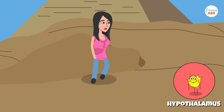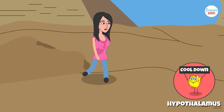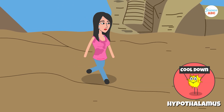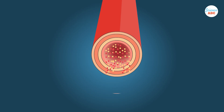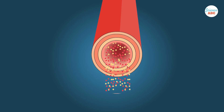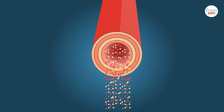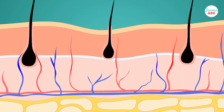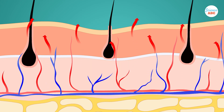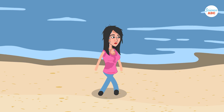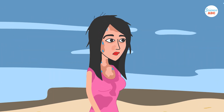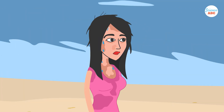Temperature-sensing neurons located all over the body send the hypothalamus information about temperature. If it's hot, the hypothalamus sends signals to cool us down. This includes signals to the blood vessels to expand, or vasodilate, allowing more blood to reach the skin where heat can escape. We also begin sweating, which cools us down through evaporation.